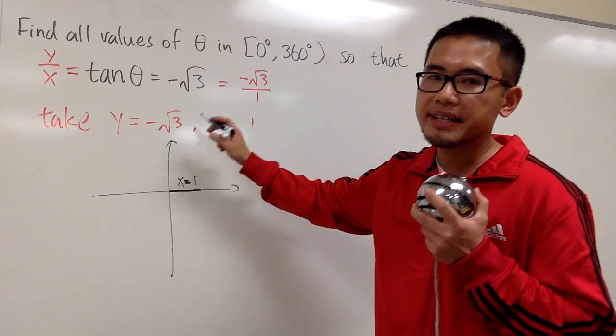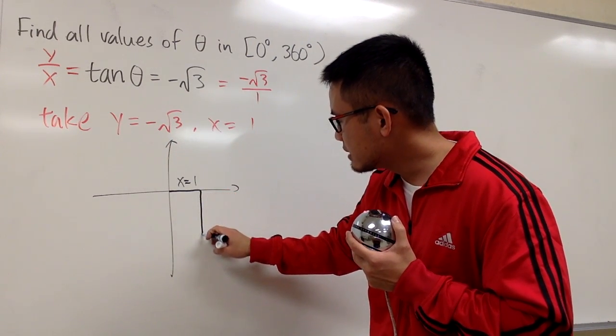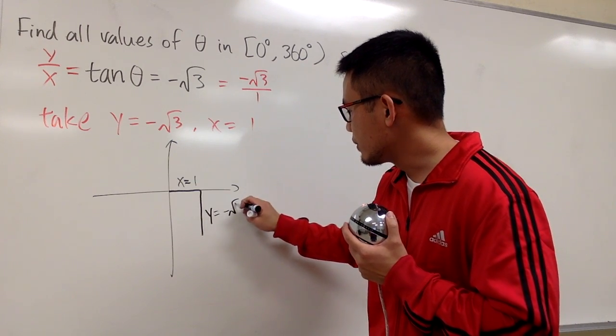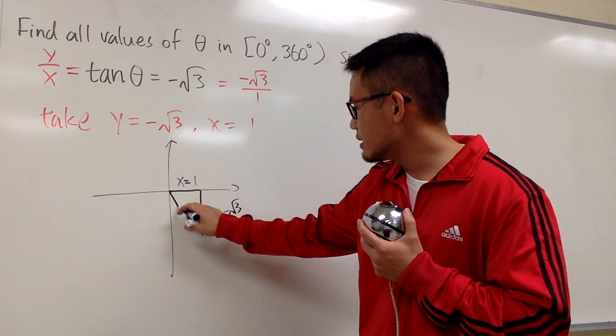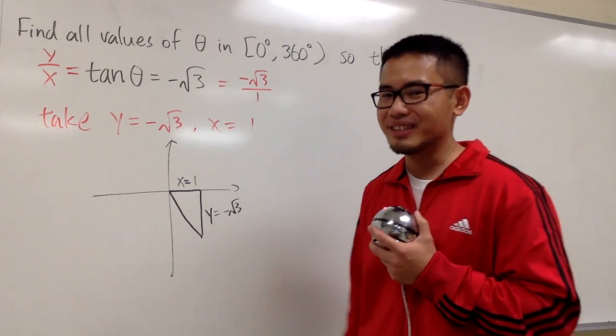And y = -√3, so I have to go down below √3 like this. Let me label this as -√3 for the y value. I'll draw a line like this for the hypotenuse. This is pretty much a special right triangle. You can see it already.